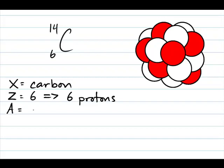A, the atomic mass, is 14. Again, the atomic mass tells you the total number of protons and neutrons. If you know, out of that 14, 6 of them are protons, then how many neutrons do you have? If 6 of the 14 are protons, that must mean you have 8 neutrons.